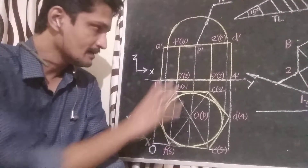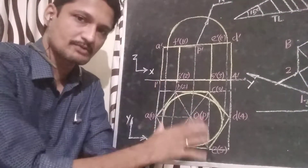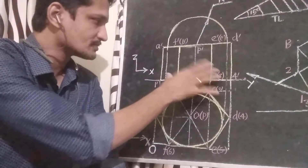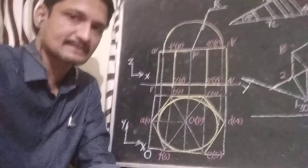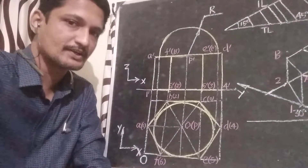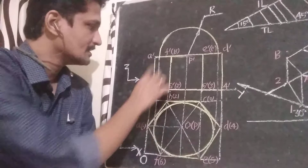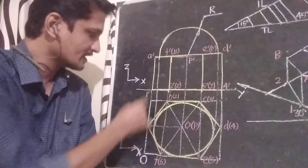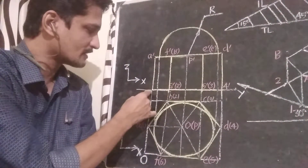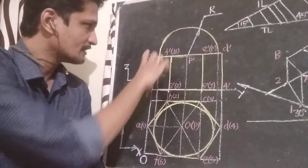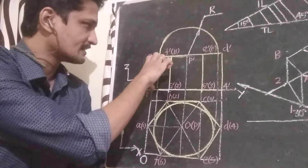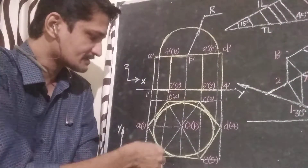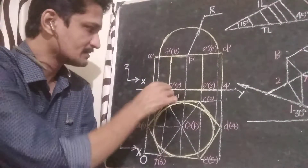The top view in the x-y plane represents the original dimensions. For the front view, we project from the top view. We have the hexagon front view with vertices labeled 1, 2, 3, 4, 5, 6.